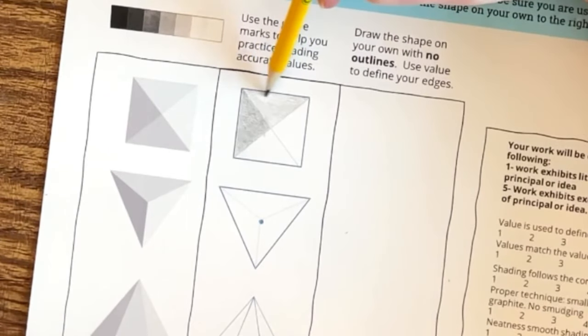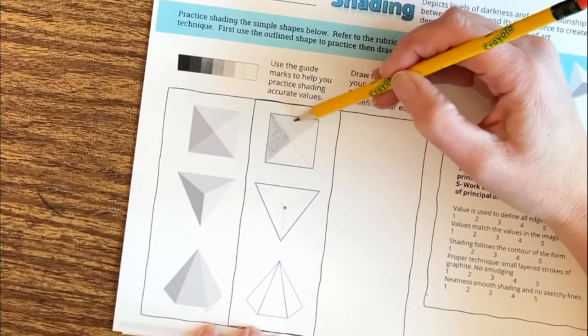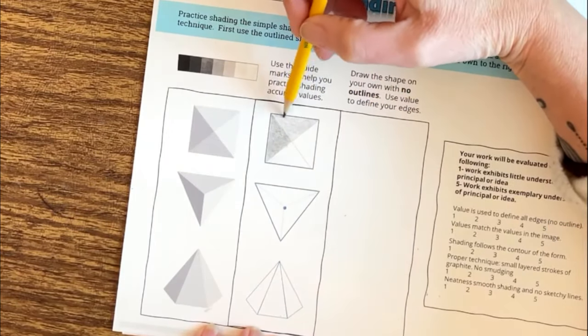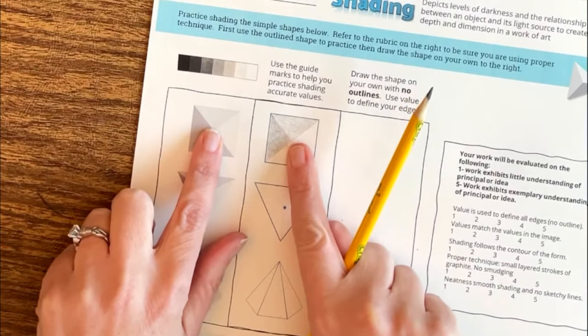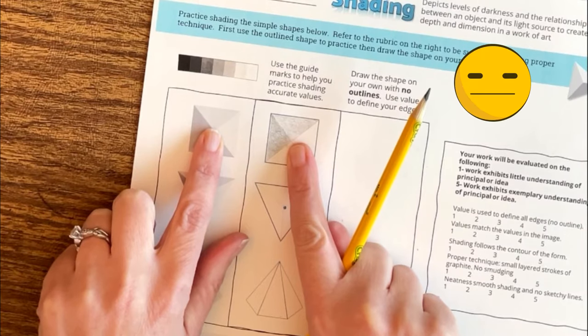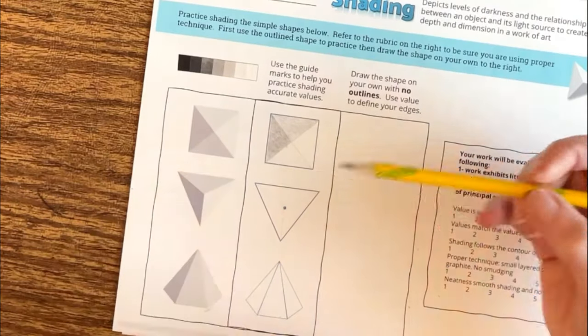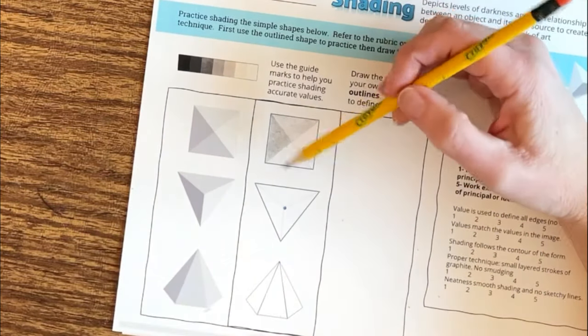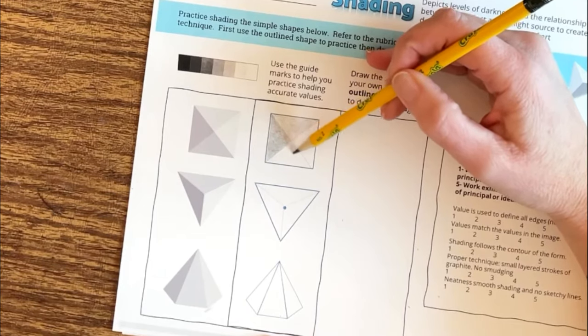For the lighter values here I'm trying to do that really soft value at the top so I'm holding my pencil a little bit further back and I'm trying very hard not to put any pressure. I'm kind of just tickling the page and barely pressing. Now I'm squinting my eyes here to try to compare these values. My value here to the right may be a little bit dark but we're going to go back and check that out again later.